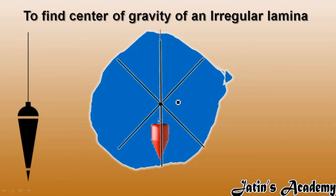So the procedure is now clear. To calculate the center of gravity of an irregular lamina, make horizontal lines with a plumb at different positions. The intersection of these lines gives you the center of gravity.